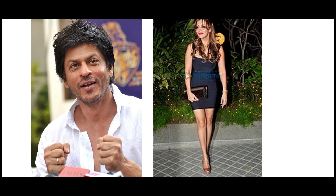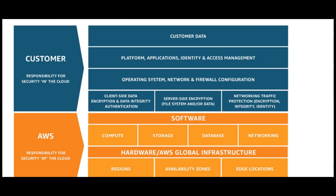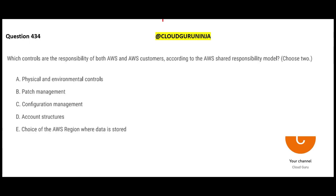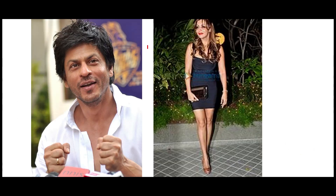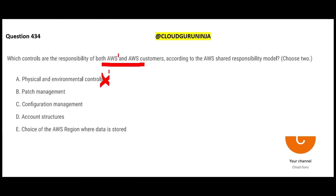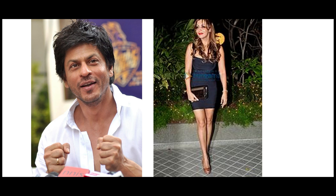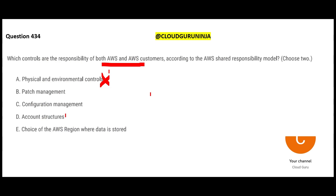The next question is about the shared responsibility model and asks which responsibilities are shared jointly between the customer and AWS. Option A - physical and environmental controls - is wrong because only AWS has access to the data centers. The customer does not. Option B - account structure - is the customer's responsibility only. Option E - choice of AWS region - is also the customer's responsibility.